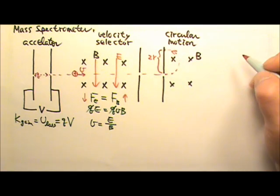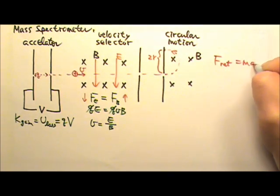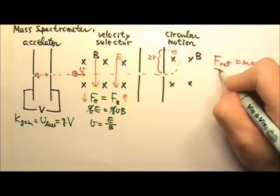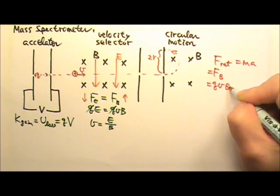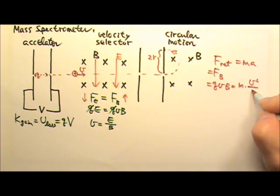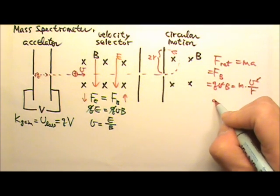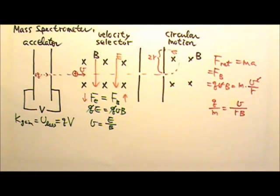If an object is doing circular motion, usually we use net force equals to Ma. Right now there is only magnetic force, which is QVB, and this is M times V squared over R. So one of the Vs would cancel.